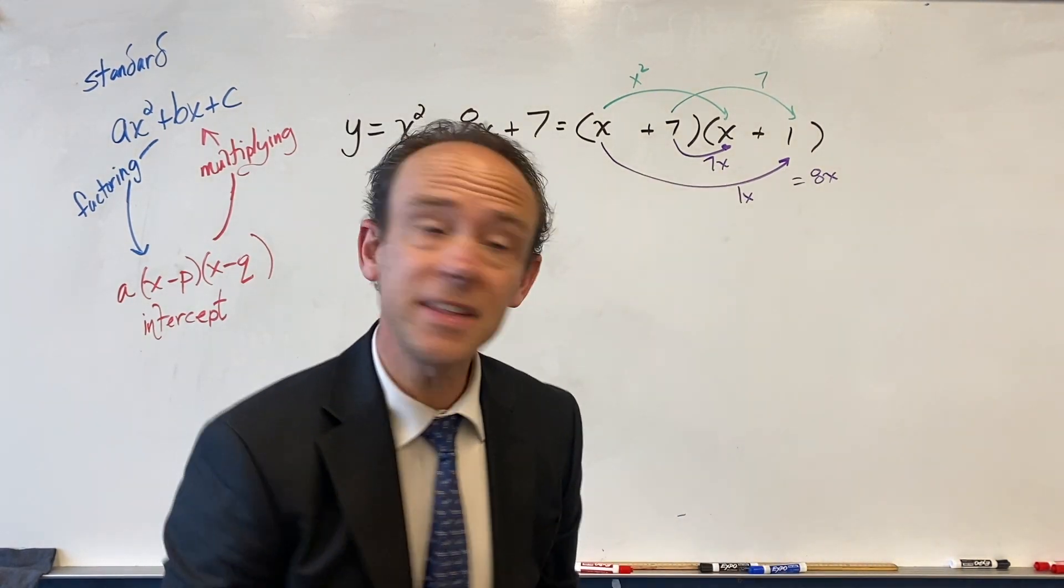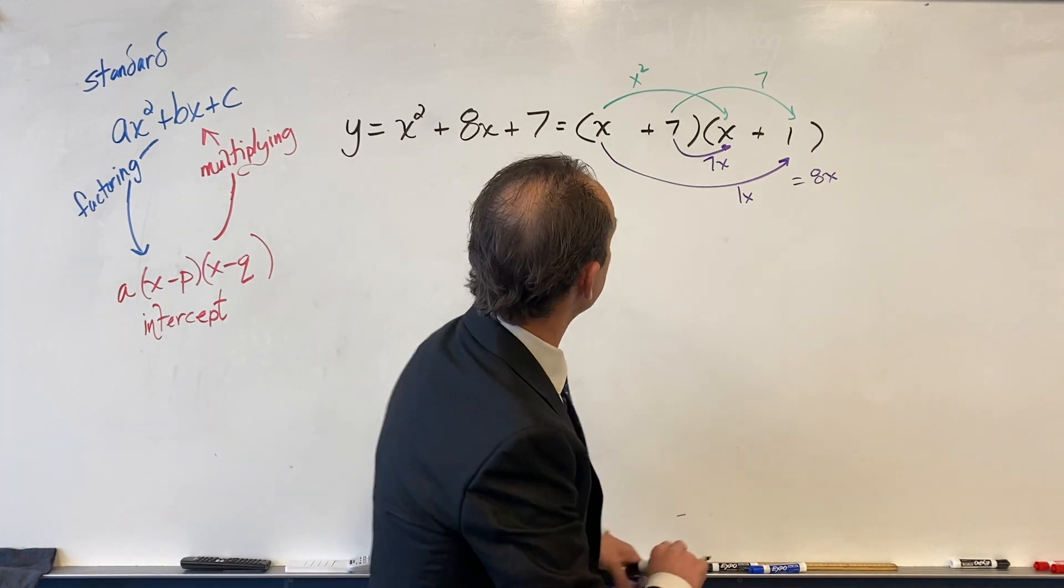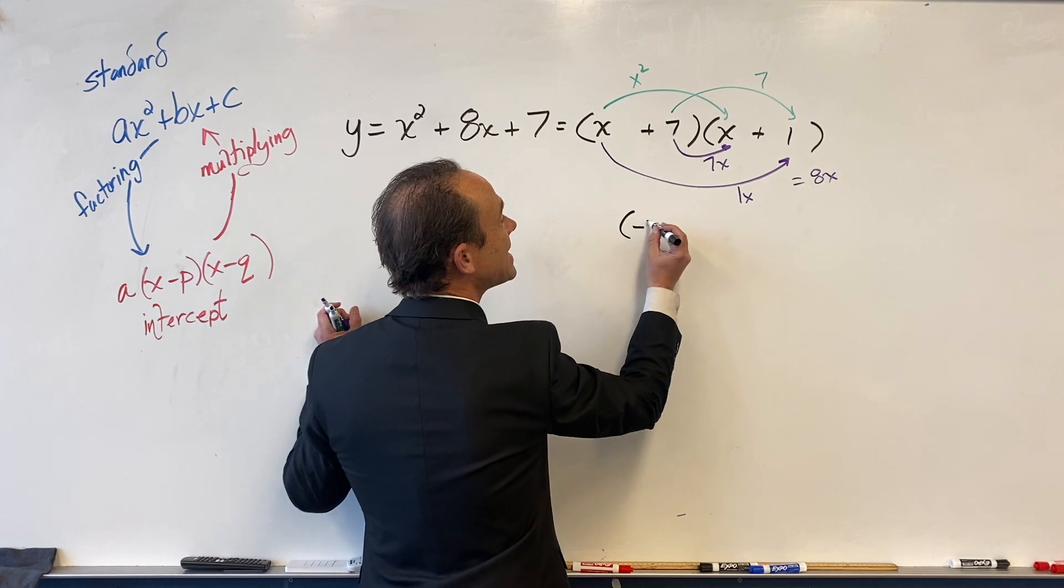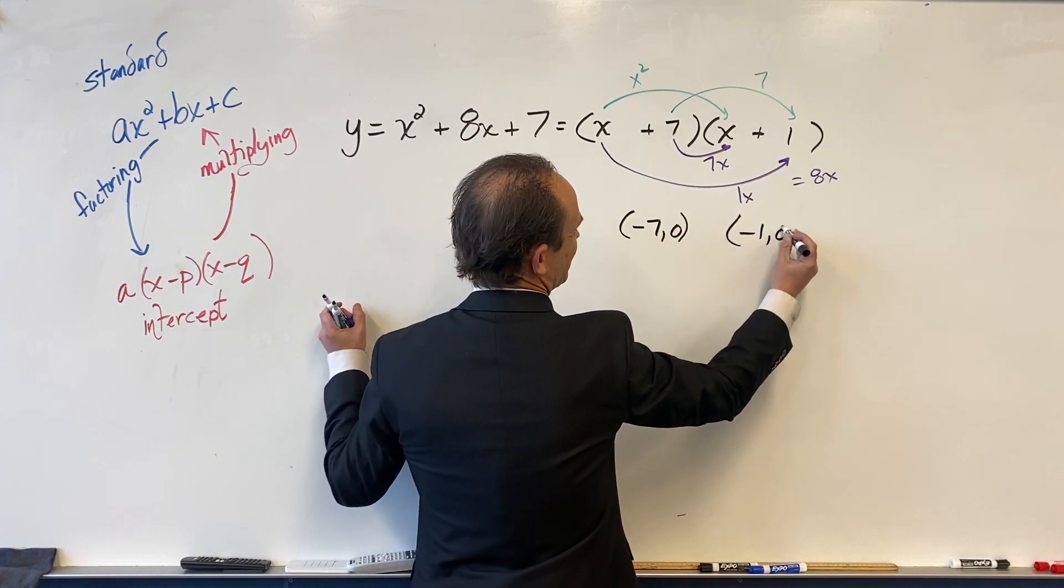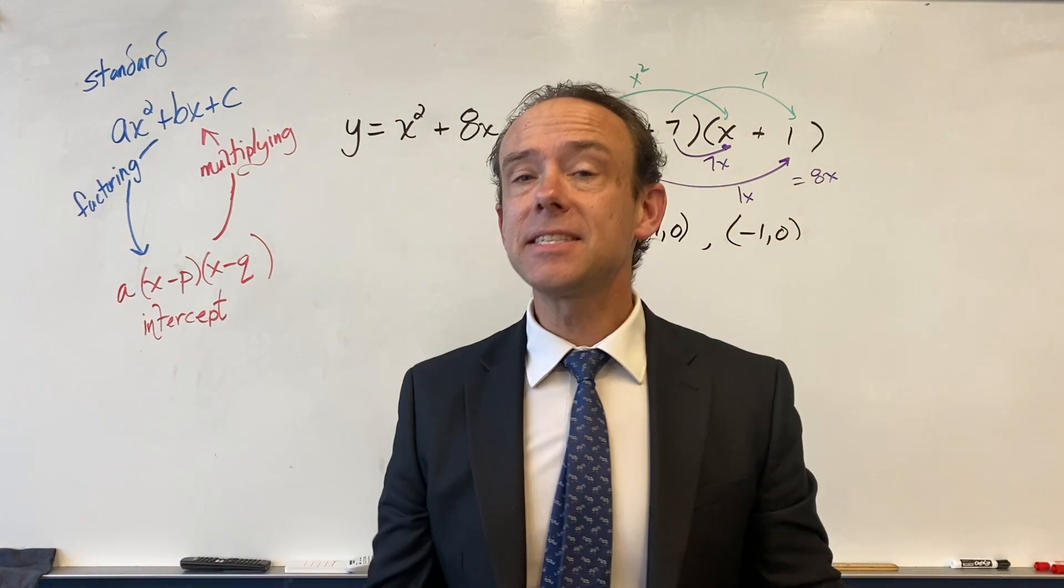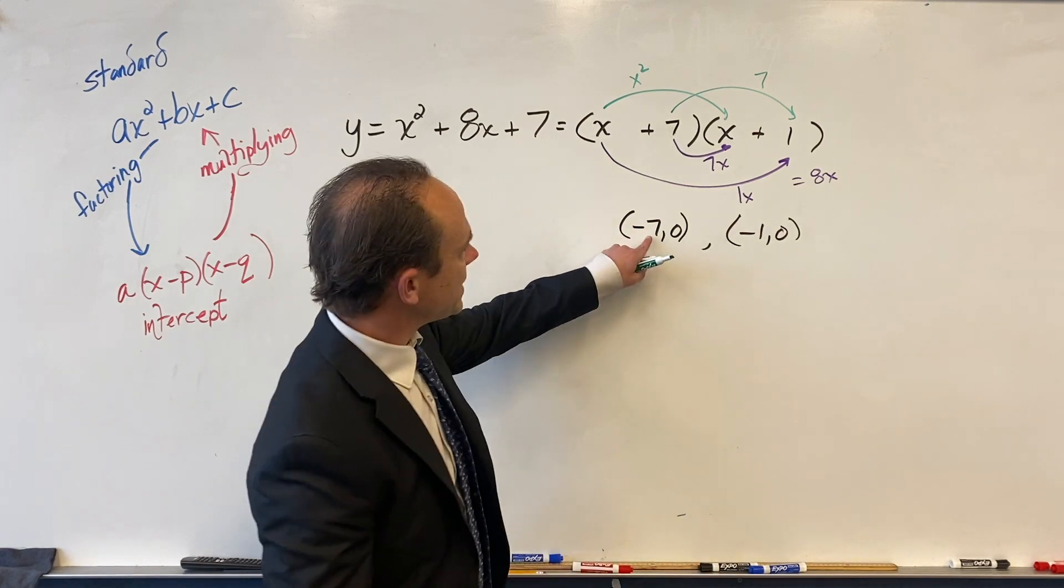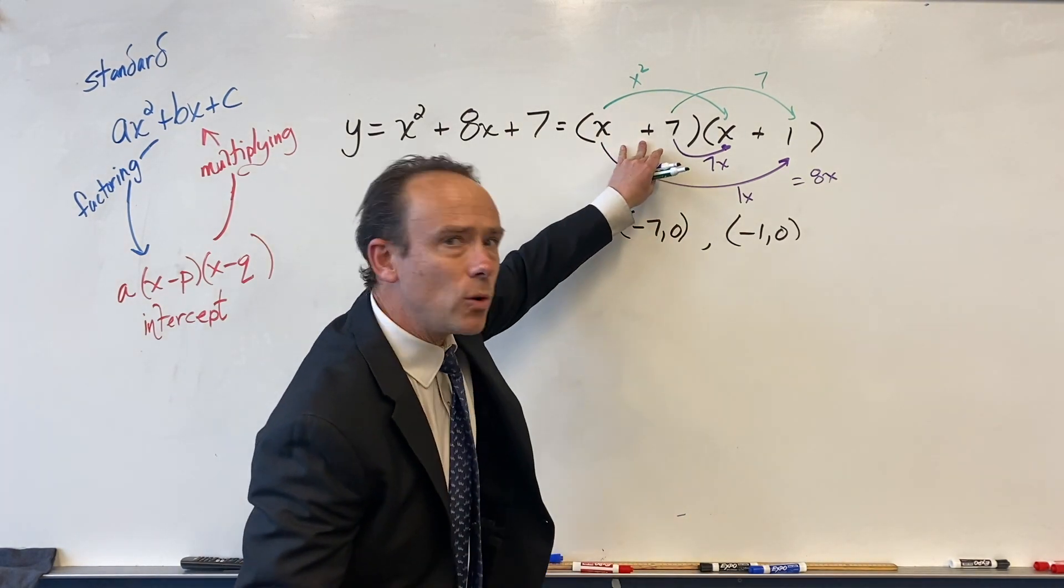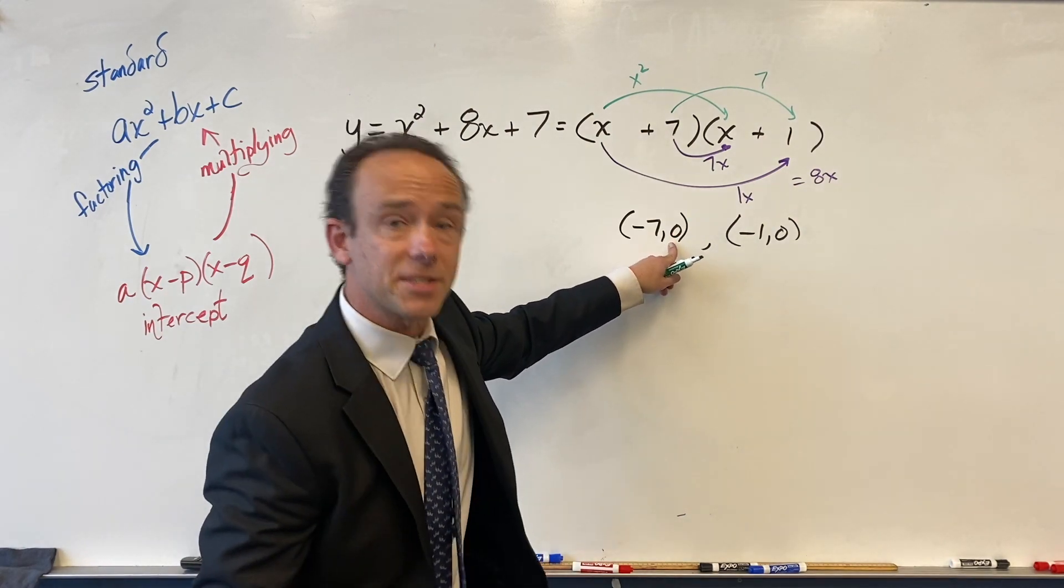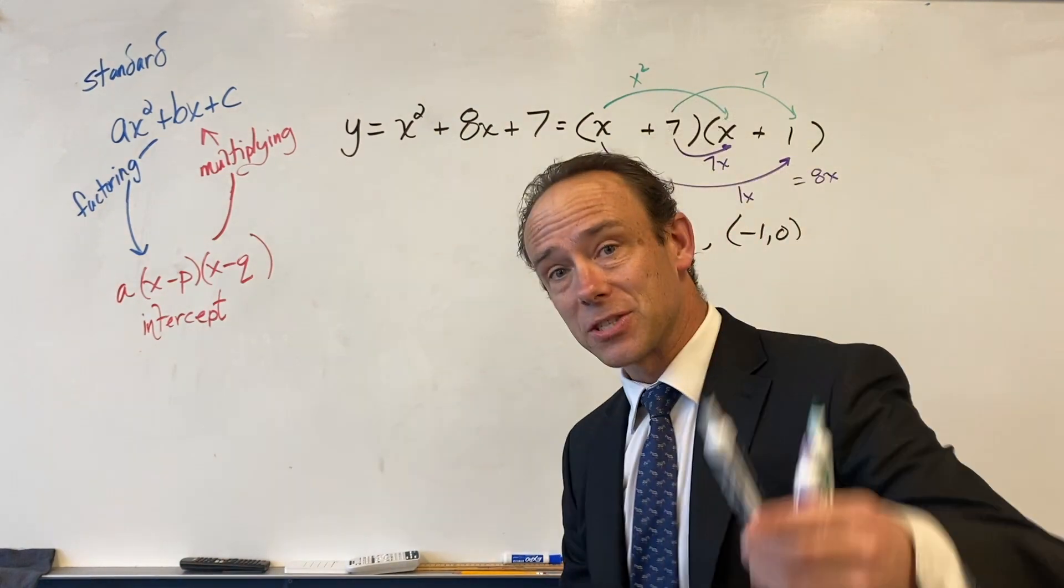Nice. Now let's find the x-intercepts, right? Because why not? It's in intercept form. So just look at that and say, okay, my x-intercepts - x has got to be at negative seven, zero and negative one, zero. Because that's how we get to zero. Negative seven, plug it in for x, that's how we get to zero.